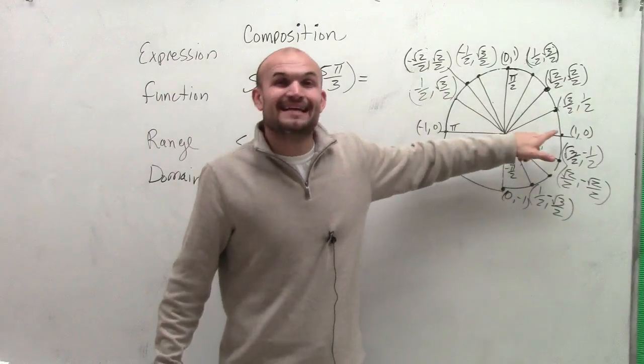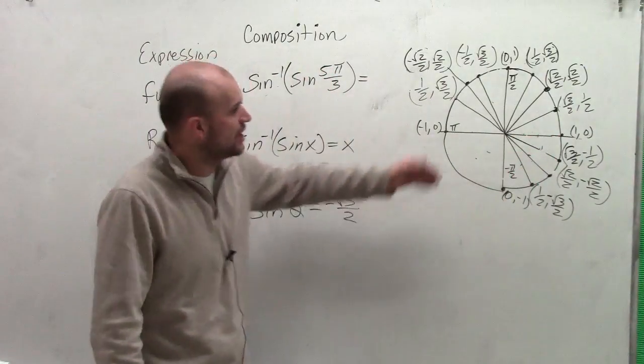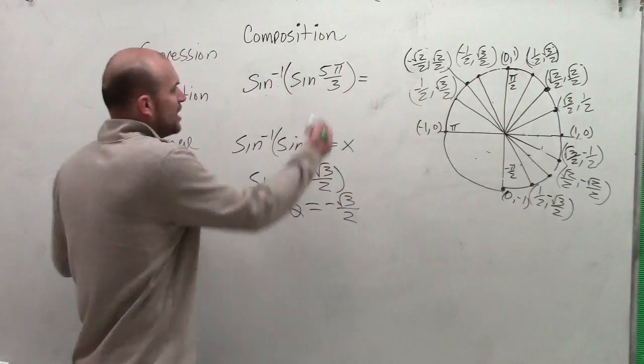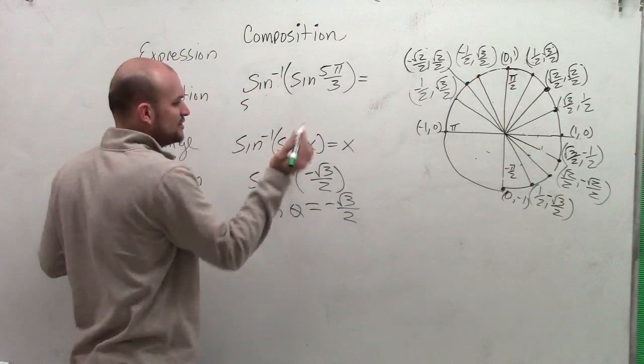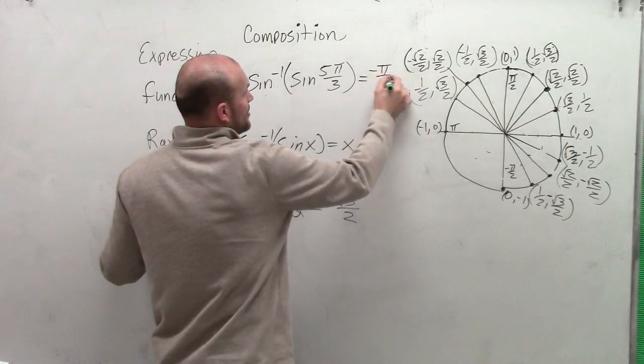However, I can use negative π over 3 because that does fall within my range of negative π halves and π halves. So I could also rewrite this. There's kind of two different ways you could write this. Therefore, you can just simply say your answer is negative π over 3.